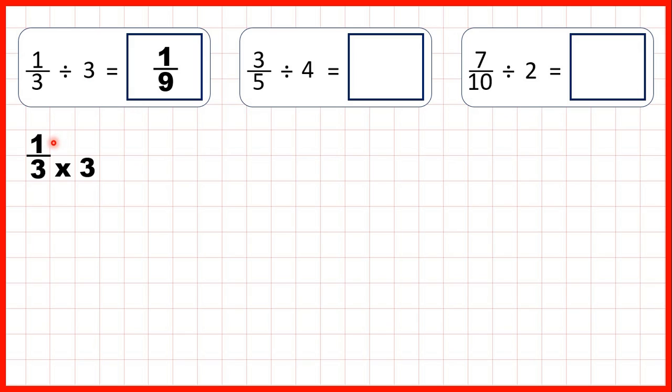So our numerator stays the same, and 3 times 3 is 9, so our answer is 1 ninth.